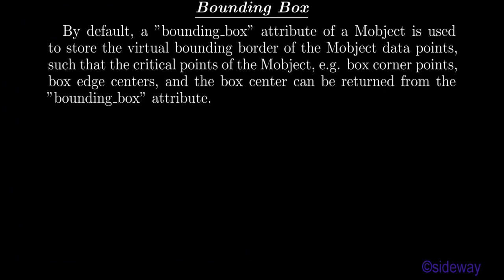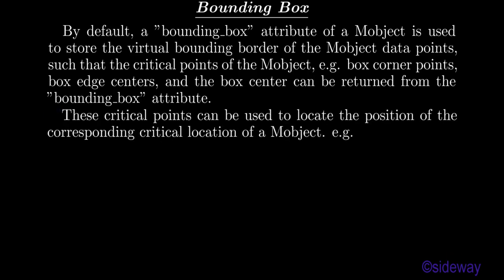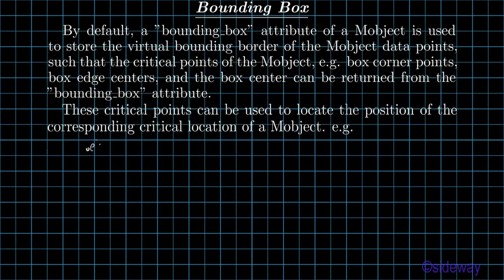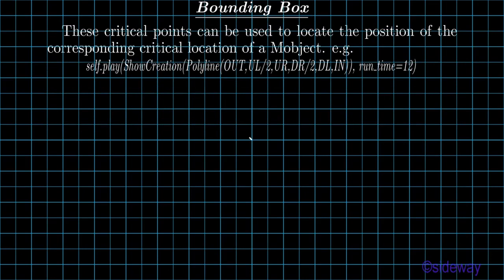Bounding Box. By default, a bounding_box attribute of a mobject is used to store the virtual bounding border of the mobject data points, such that the critical points of the mobject — for example, box corner points, box edge centers, and the box center — can be returned from the bounding_box attribute. These critical points can be used to locate the position of the corresponding critical location of a mobject. For example: self.play, show_creation, polyline, out, ul/2, ur, dr/2, dl, in, run_time=12.